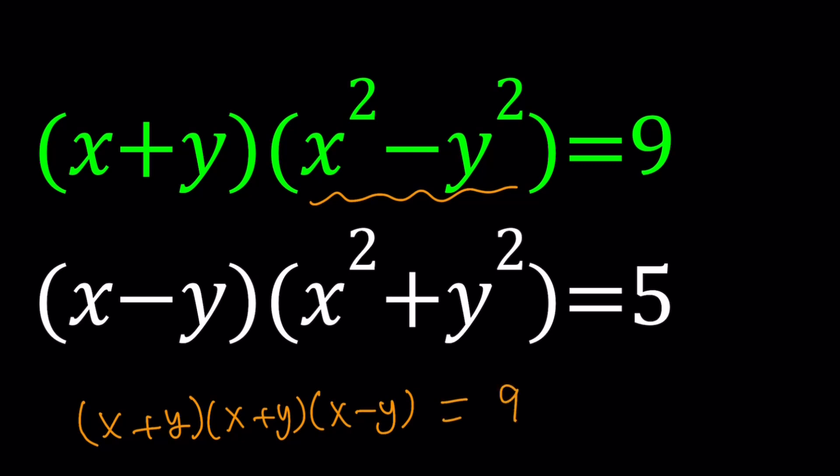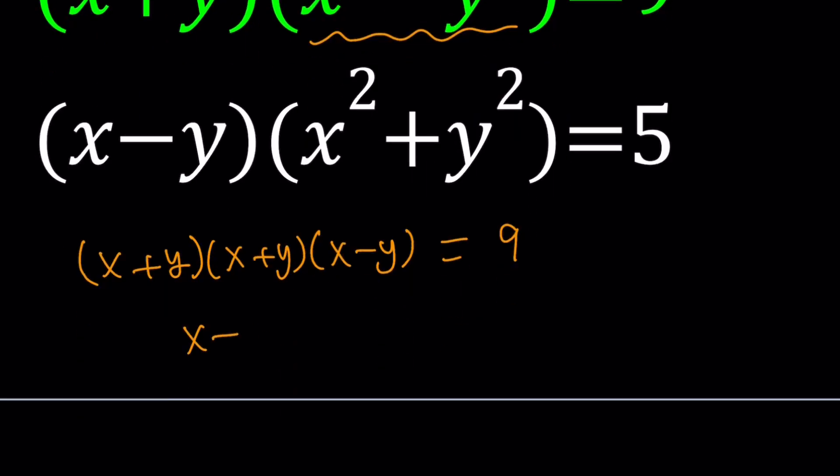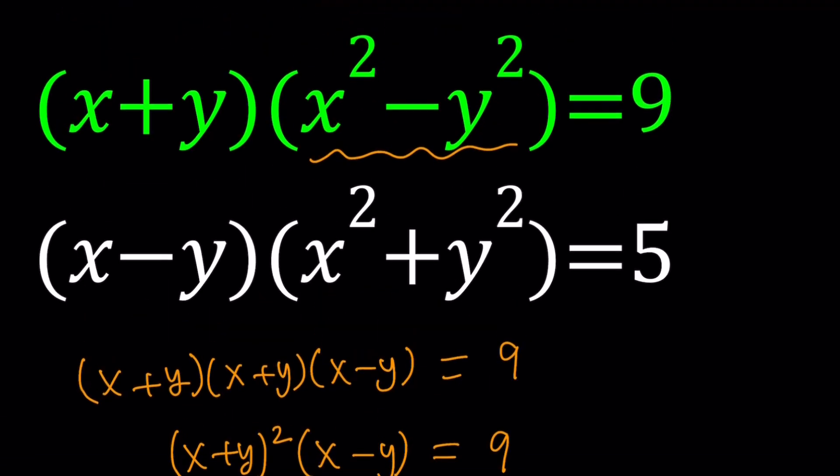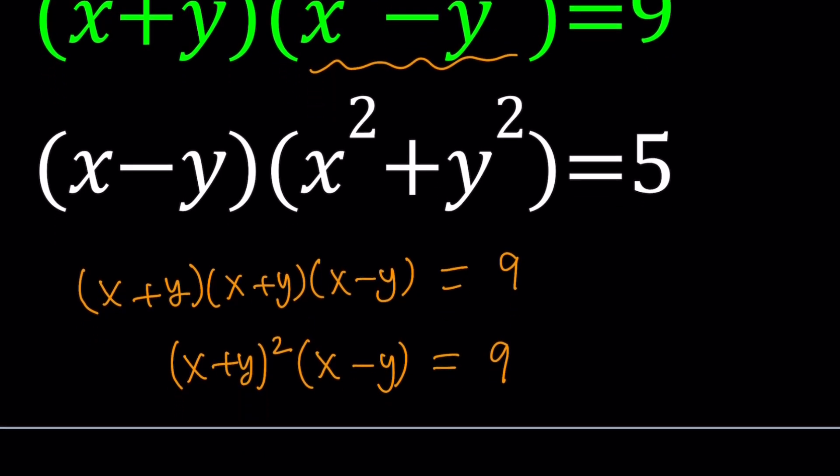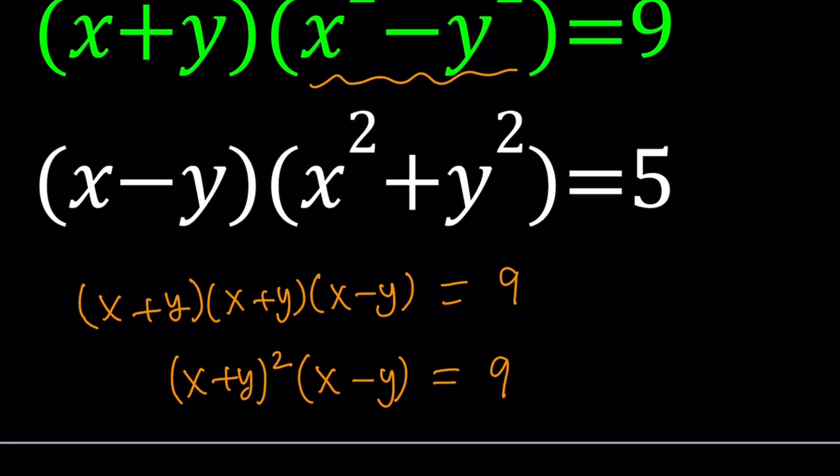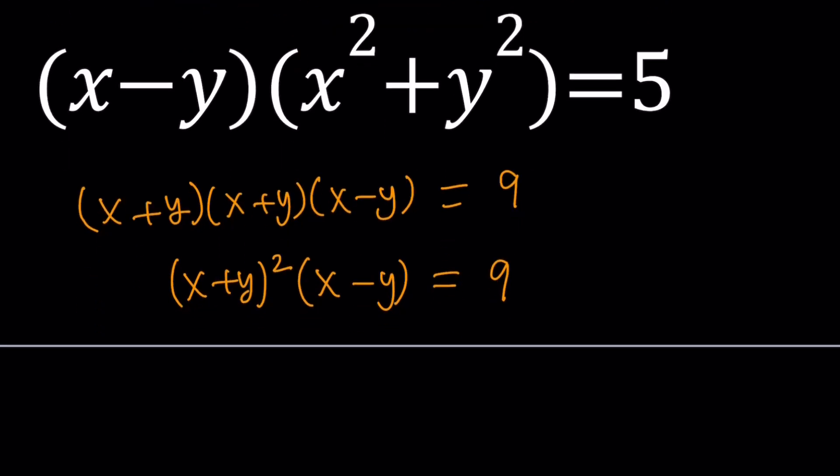But how does this help? Well, now you can write it as x plus y squared times x minus y, and that is equal to 9. Now, notice that in the second equation, you have x minus y, and we have in the first equation x minus y. We didn't see it. If we didn't factor it, we wouldn't see it.